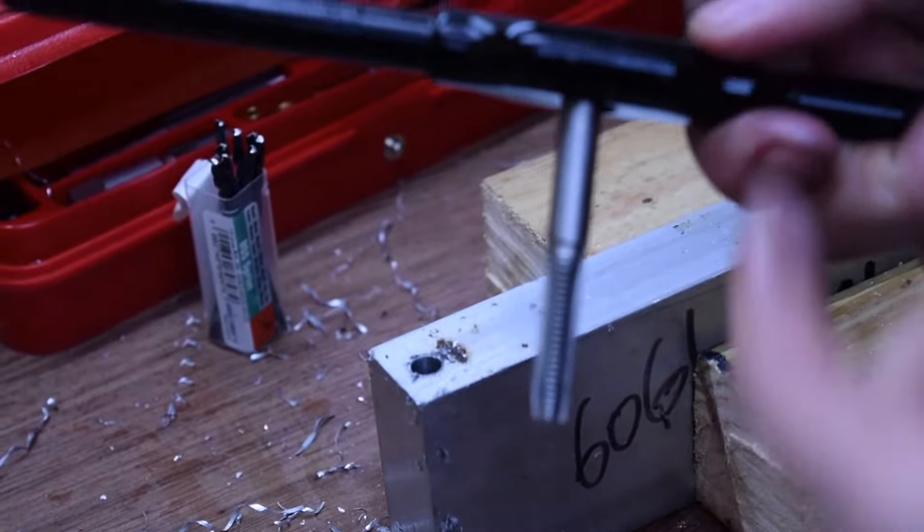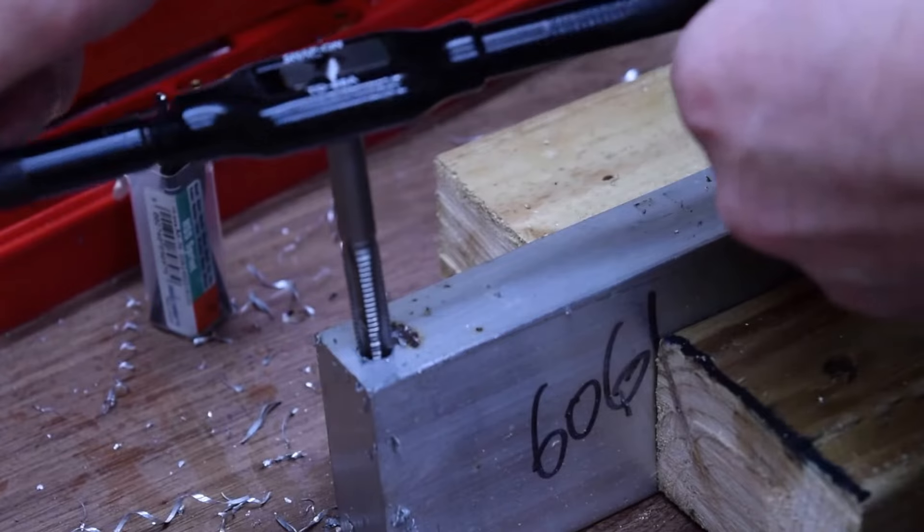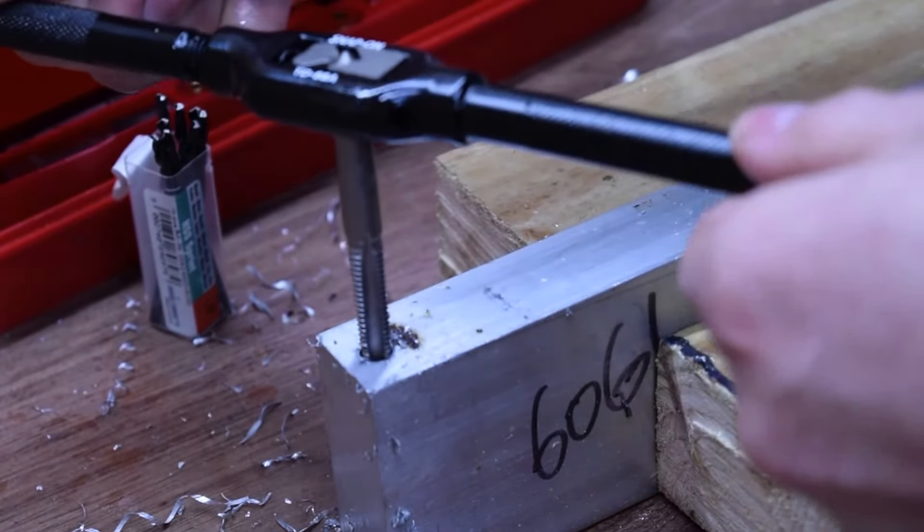Get a tap and a tap holder and start to thread the hole. Obviously because it's a right-hand thread we start threading it right.